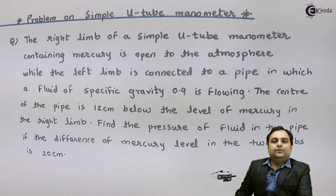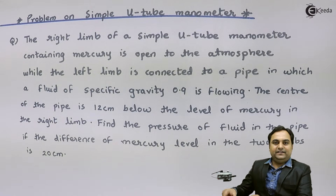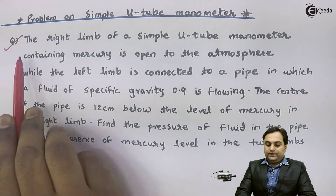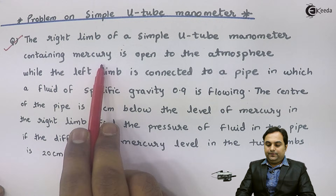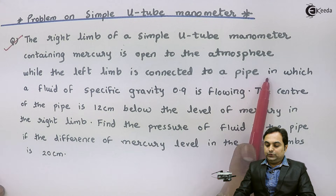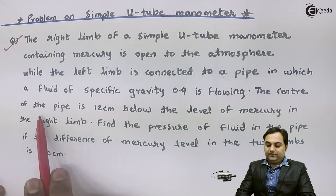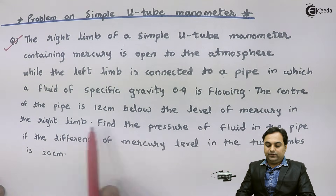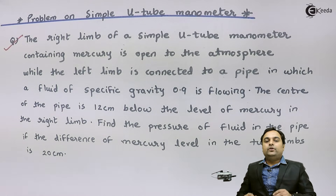Hello friends, in this video we will see a problem of pressure measurement by using a U-tube manometer. The right limb of a simple U-tube manometer containing mercury is open to the atmosphere, while the left limb is connected to a pipe in which a fluid of specific gravity 0.9 is flowing. The center of the pipe is 12 centimeters below the level of mercury in the right limb. Find the pressure of the fluid in the pipe if the difference of mercury level in the two limbs is 20 centimeters.